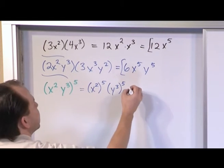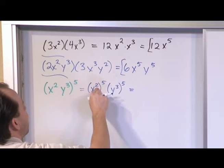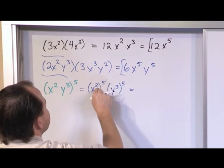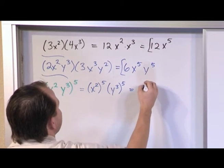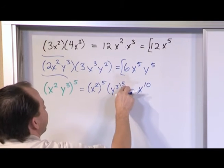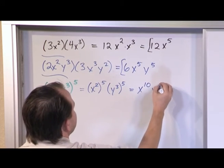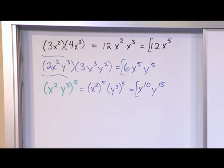Now that we have it written out like this, you can see that for the first one you have a power raised to a power, so you multiply the powers. 2 times 5 is 10. Here we have 3 times 5, so we're going to get 15. So x¹⁰y¹⁵. So really you're using things we've learned before in some of these review problems.